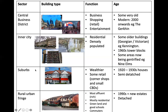The next zone is the suburbs. These are much wealthier and there is some retail — small high streets and corner shops. These were largely built in the 1920s and 1930s when London started to really expand and push out into the countryside.